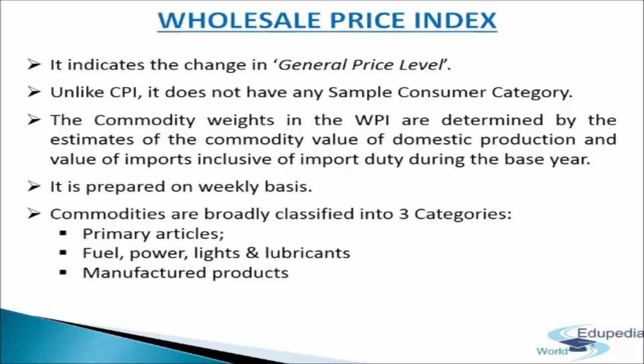Manufactured Articles includes manufactured goods like Sugar, Edible Oil, Textile, Machinery and Equipment, Paper and Paper Products, Leather and Leather Products, Chemicals, Fertilizers etc. The number of items in this group is 380 and the weight given to them is 63.75%. This means that Manufactured Products have nearly two-thirds importance in WPI.